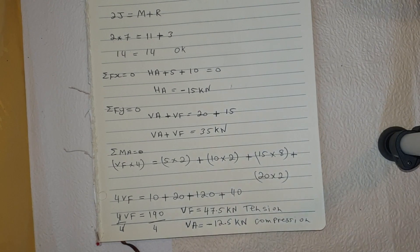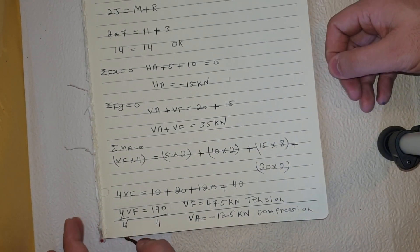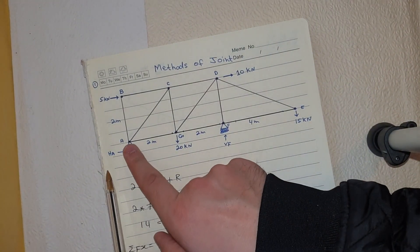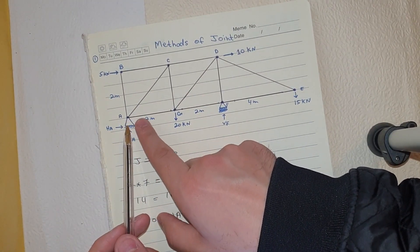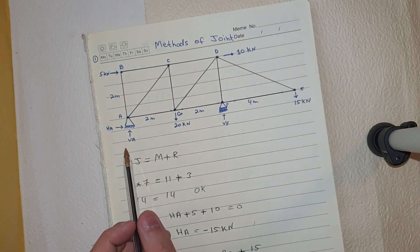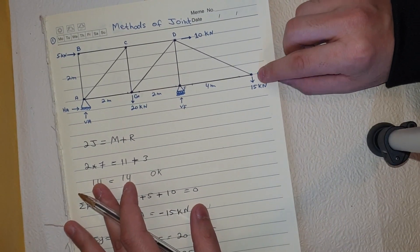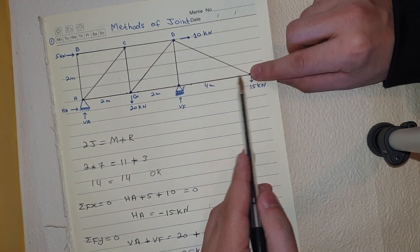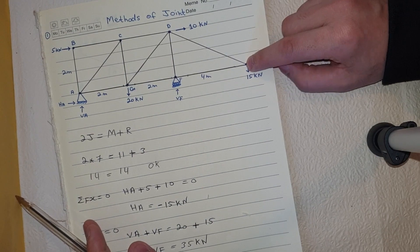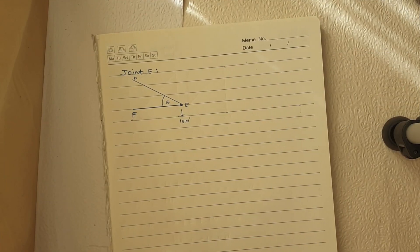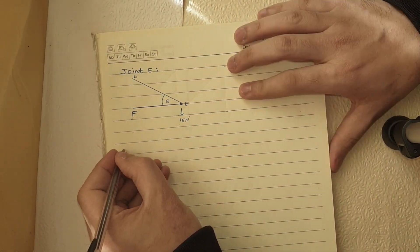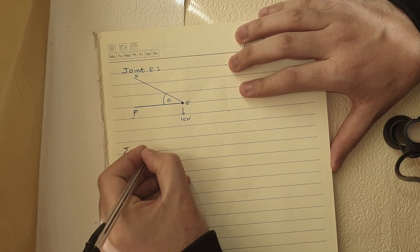Next step is to calculate the member forces. At joint A there are three unknowns (AG, AB, and AC), so we can't start there. Instead, I'll start at joint E, which has only two unknowns: FE and ED. Taking the summation of Fx = 0: −FE − ED·cos(θ) = 0.